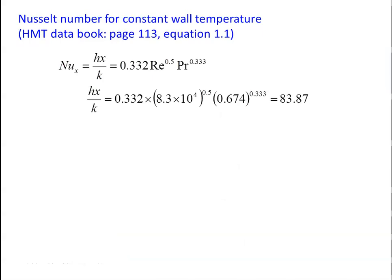For laminar flow with constant wall temperature, use Nusselt equation from HMT data book, page 113, equation 1.1: Nu = hx/k = 0.332 × Re⁰·⁵ × Pr⁰·³³³. Substituting: 0.332 × (8.3 × 10⁴)⁰·⁵ × (0.674)⁰·³³³ = Nusselt number = 83.87.